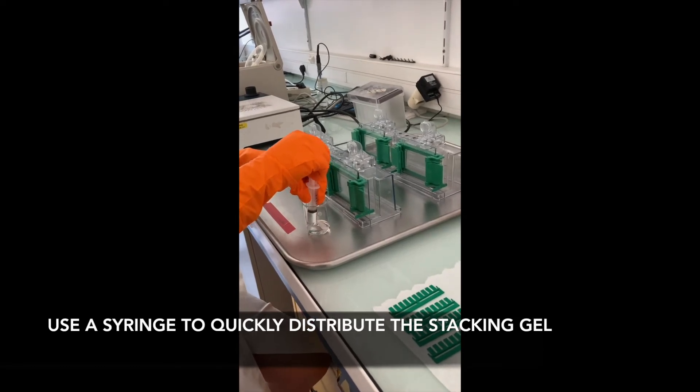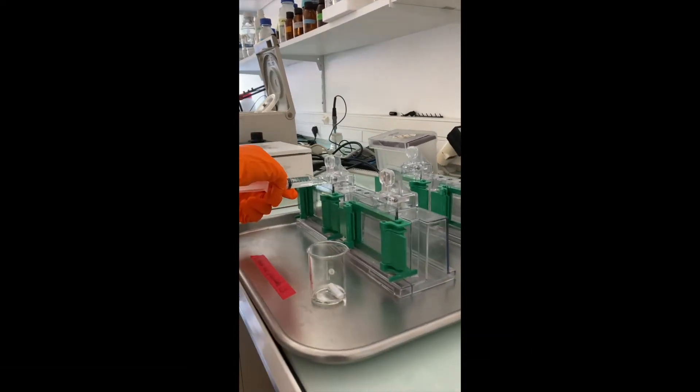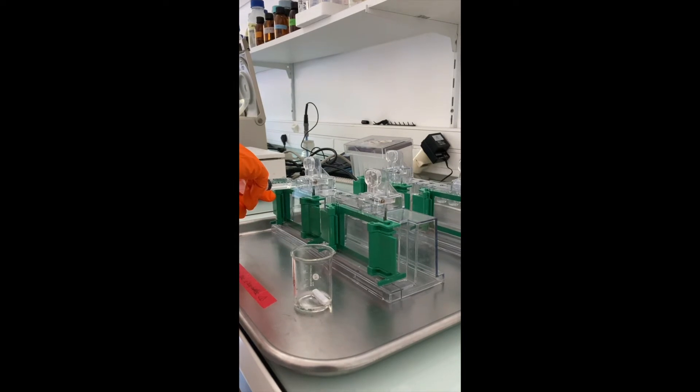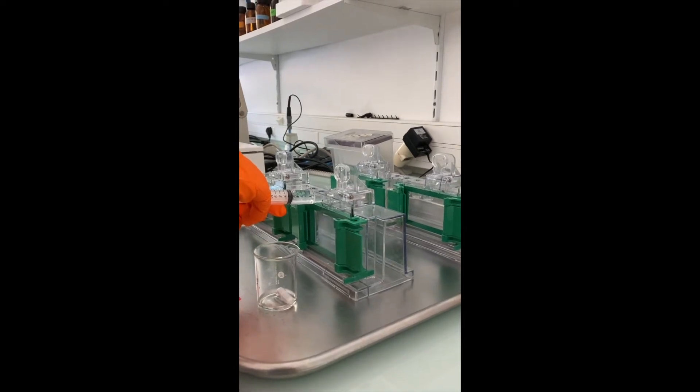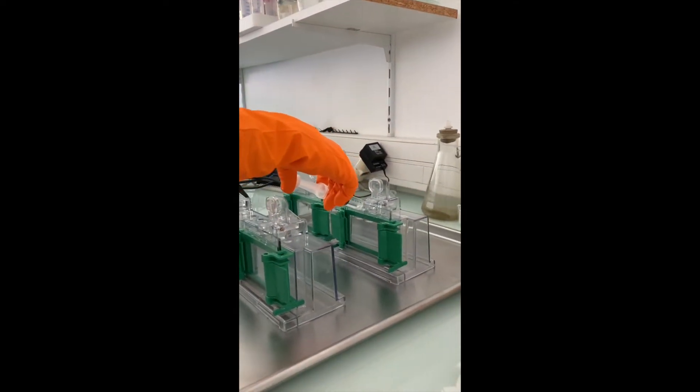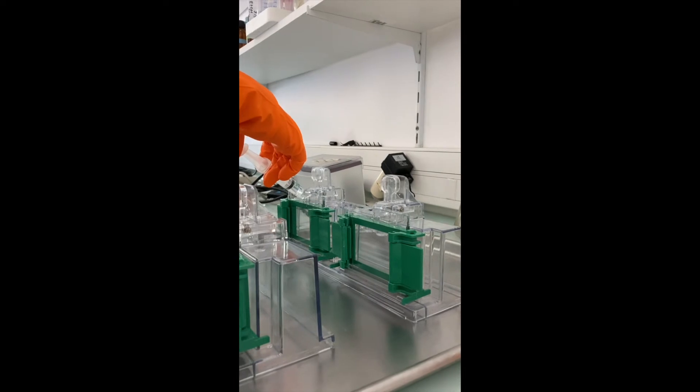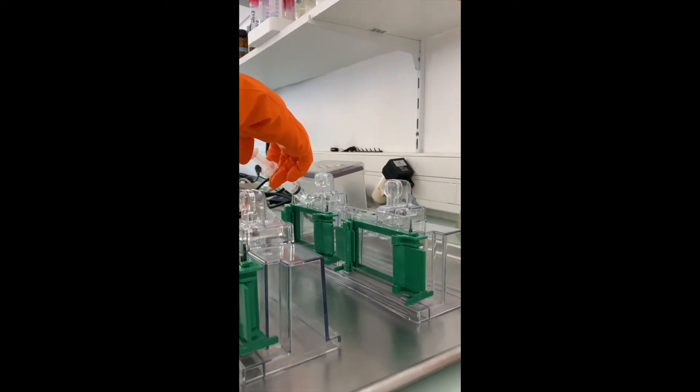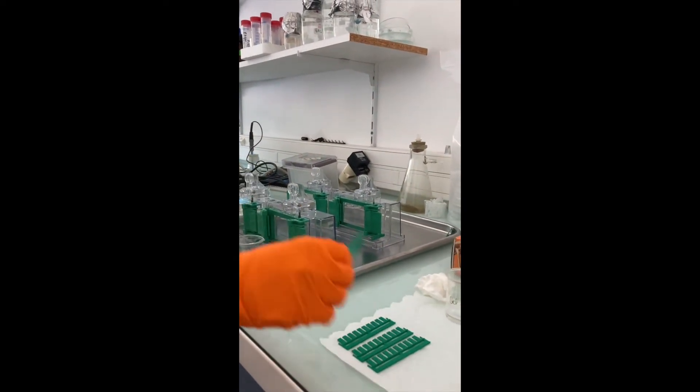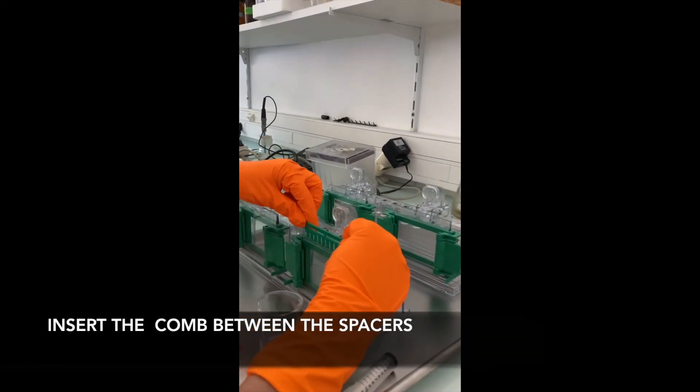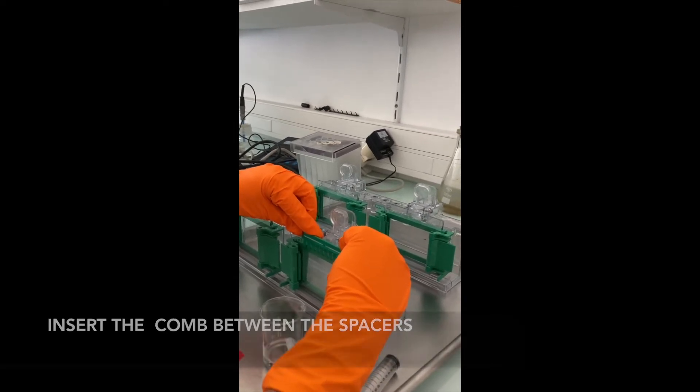At this step the gel will start to quickly polymerize, so use a syringe to distribute the stacking gel in the four gel sandwiches. Immediately insert the desired comb between the spacers, starting from the top of the spacer plate. Repeat the operation for the four gels.